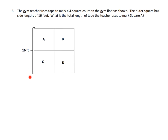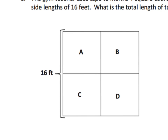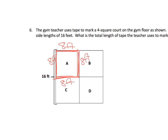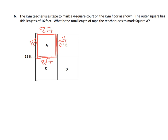If this whole length is 16 feet, what does that mean for just this one small piece? It's probably 8 feet. Which means each side of square A is 8 feet. So we now know how much tape the gym teacher needs to make square A — that'd be four times eight feet.